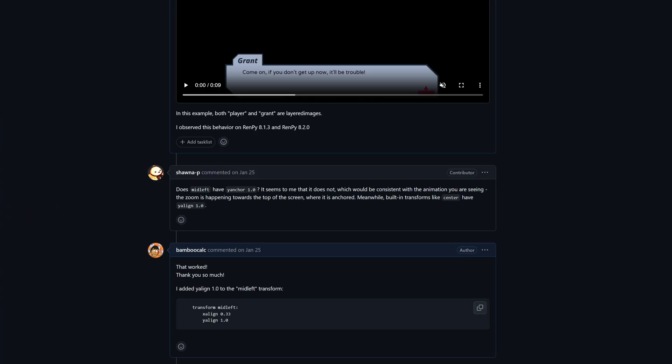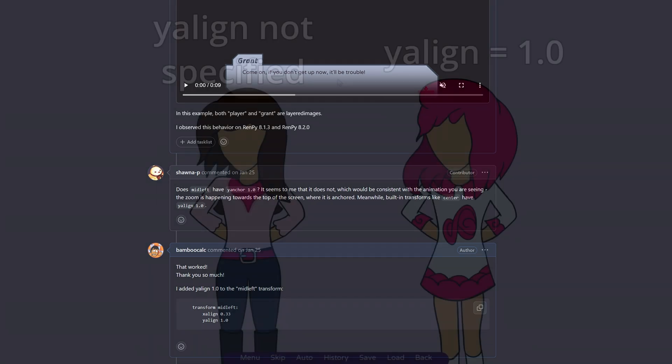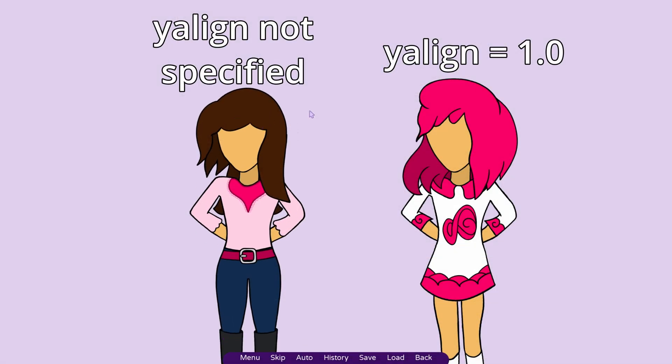The third and final thing is that if you have a custom transform, make sure to set y-align to 1. Otherwise, any sort of y-zoom you have on the character is going to pull from the bottom instead of pulling from the top.